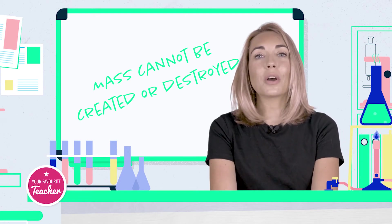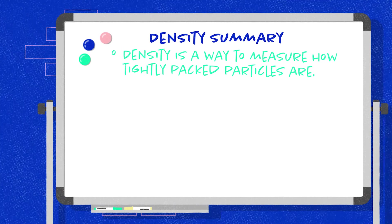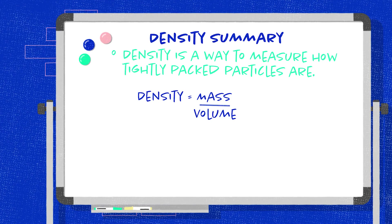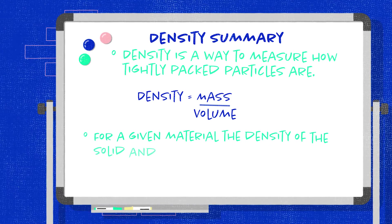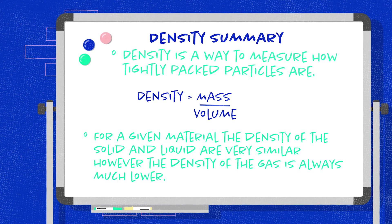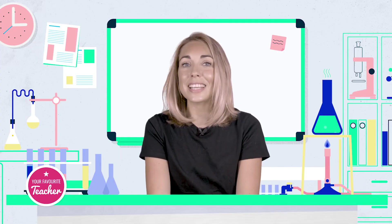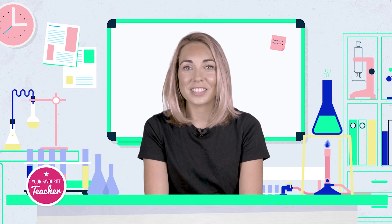To summarise: density is a way to measure how tightly packed the particles are. Density can be calculated by dividing mass by volume. For a given material, the density of the solid and liquid are very similar; however, the density of a gas is always much lower. I'm Miss Meeks and we've been looking at the particle model and density with your favourite teacher.